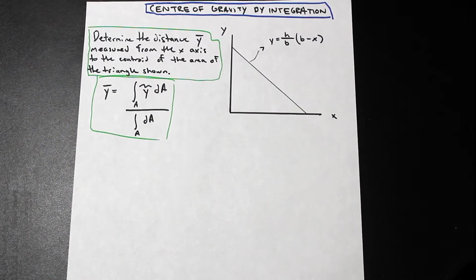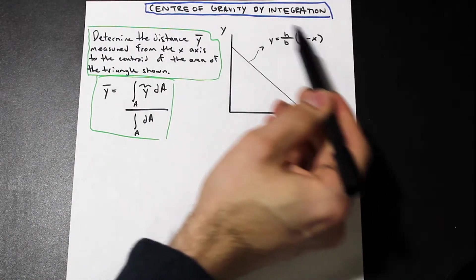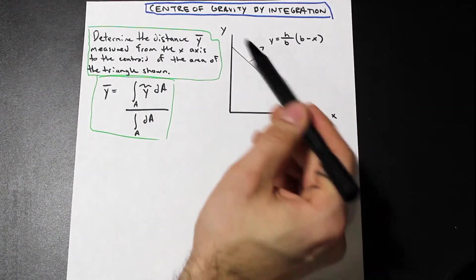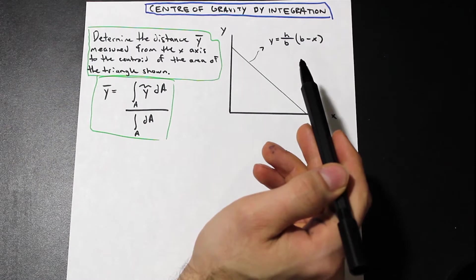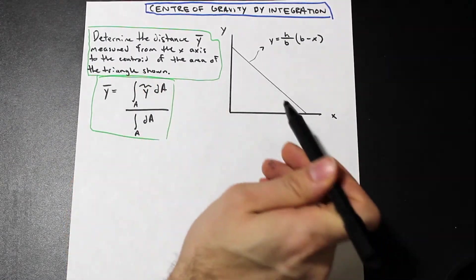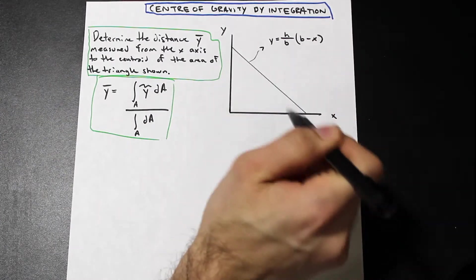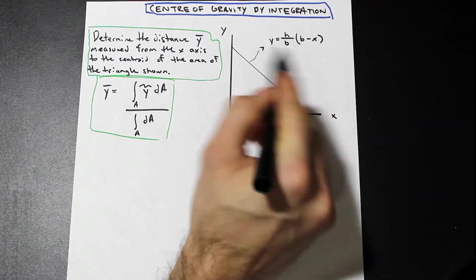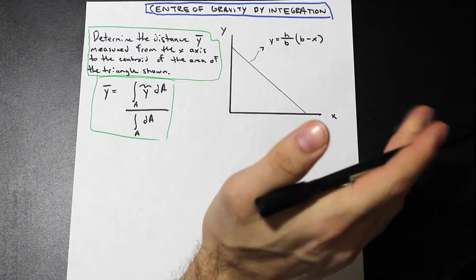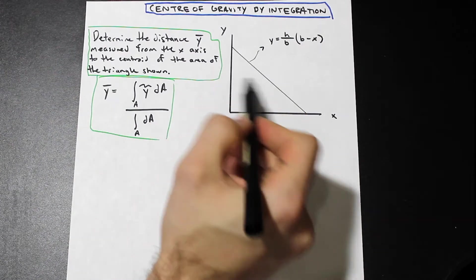We're going to be doing a video today on the center of gravity by the method of integration. In these types of videos, this is kind of like a strengths one, second-year statics type of concept, where you're given a formula or a function for a curve on the xy plane, and we're asked to find the center of gravity by using integration. In this question, we're just going to find y bar — the distance from the x-axis to the centroid of the area bounded by this curve and the x and y-axis.